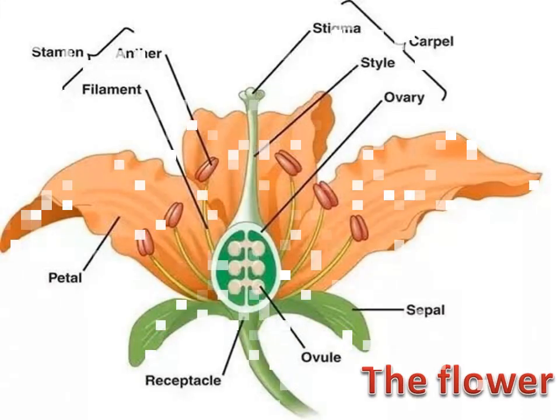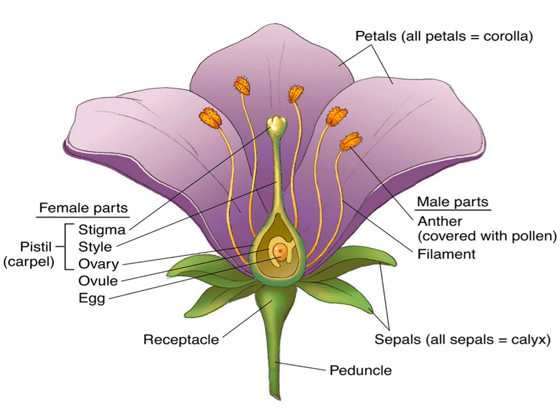The flower is the organ of sexual reproduction in flowering plants. It is a short stem whose leaves are modified to form reproductive organs, which in turn form seeds inside fruits. The flower arises from a floral bud that emerges from the axil of a leaf called a bract. The bract is the green leaf where the floral bud emerges from its axil and develops into a flower. The axil may carry some flowers, which are known as an inflorescence — a group of flowers carried on the same axil.